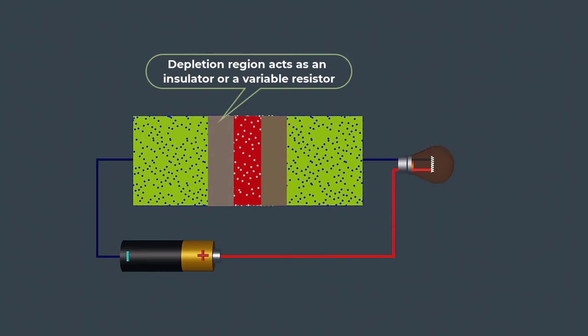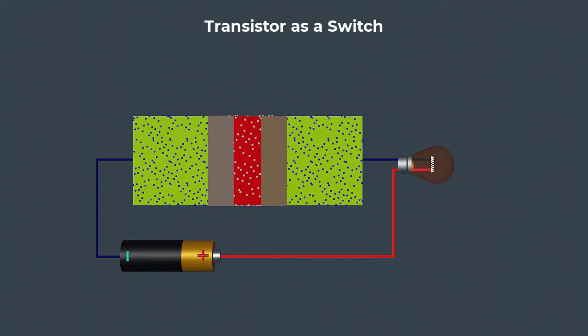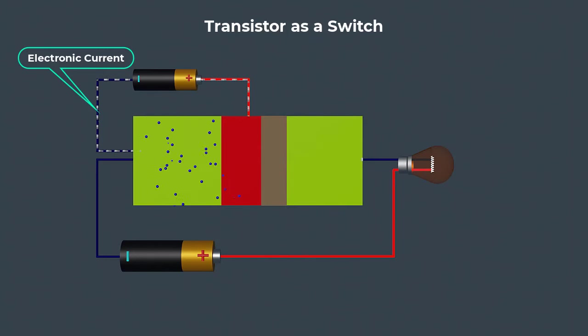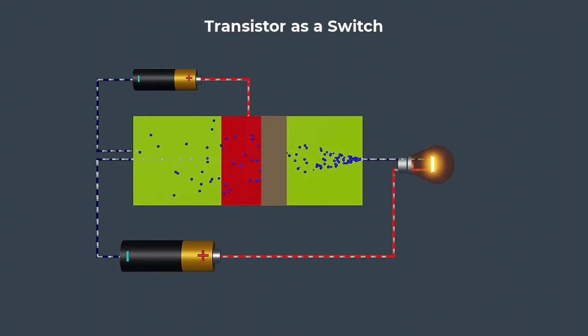This region acts as an insulator or a variable resistor. If the base-emitter junction is forward biased, the depletion layer is narrowed and more electrons can flow from the emitter to the collector. This increases the collector current and the transistor acts as an on switch.